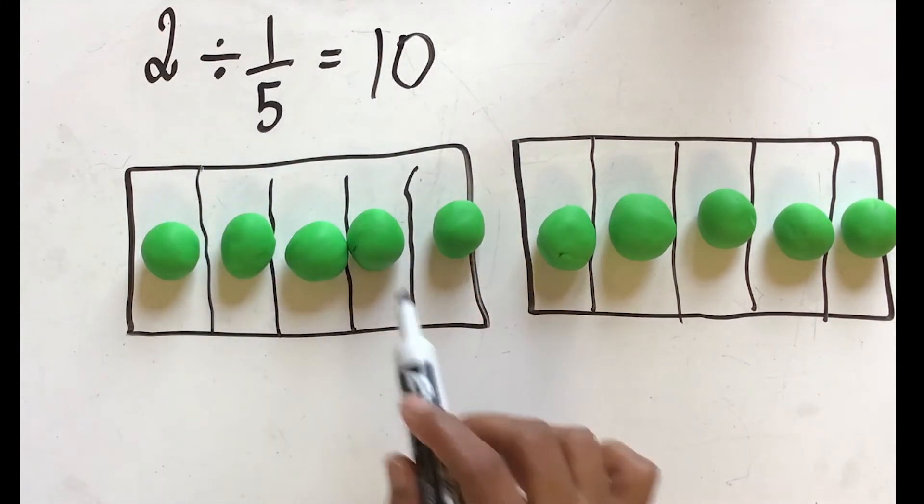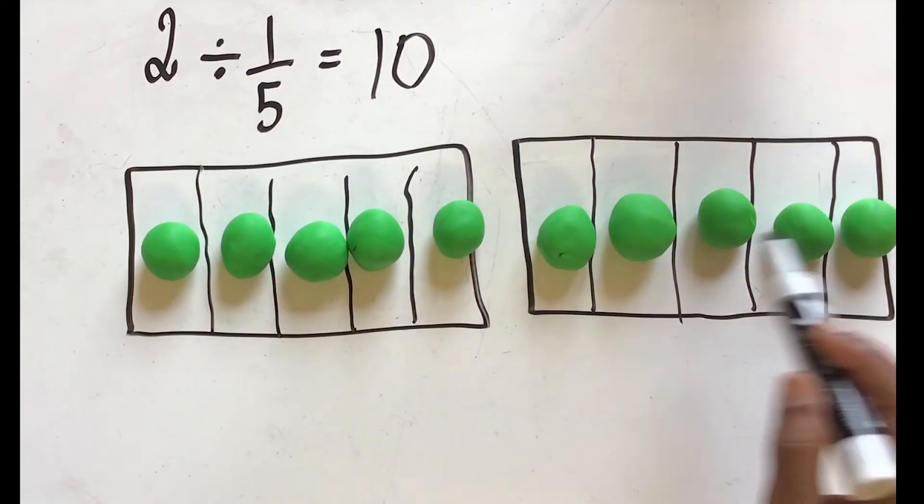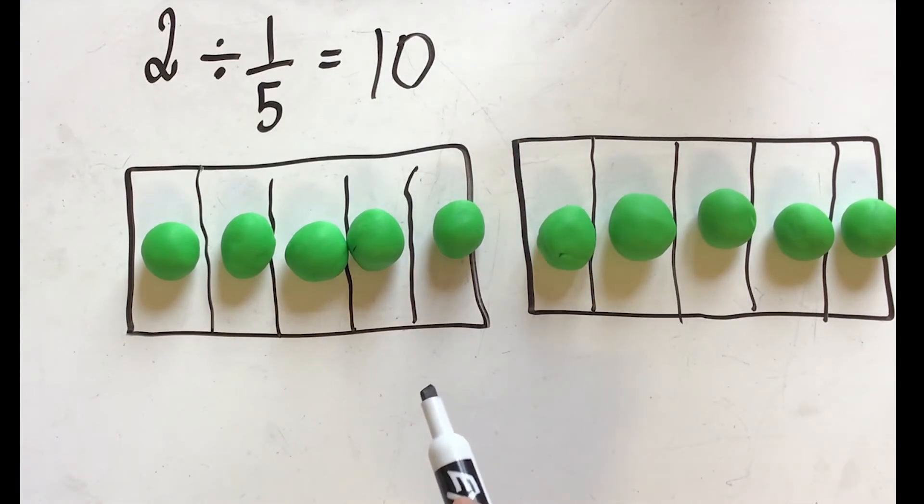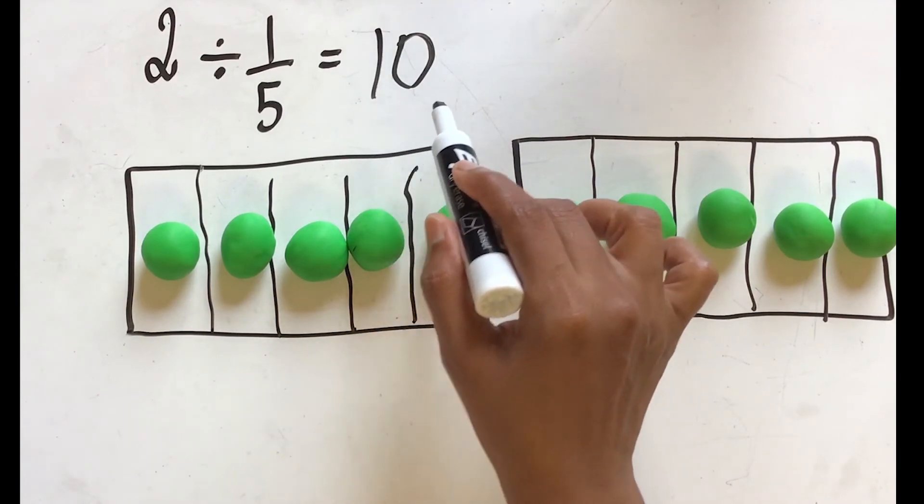You have one pound of Play-Doh, you have another pound of Play-Doh, and if you want to put one-fifth of the Play-Doh into bags, we would need ten bags in this case.